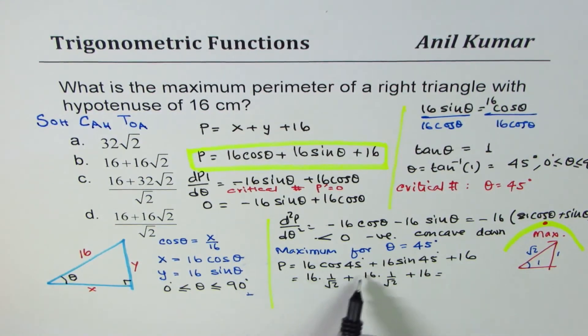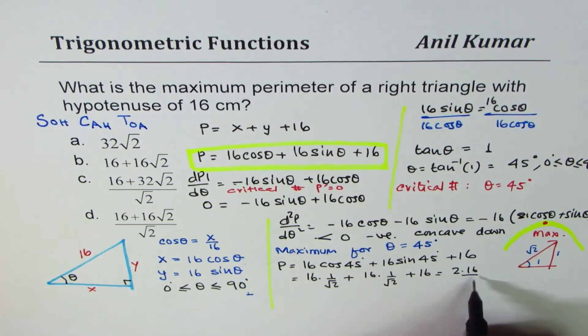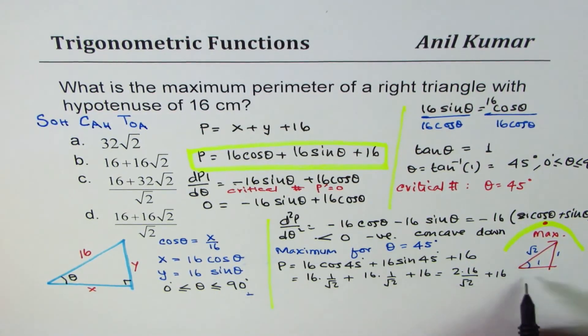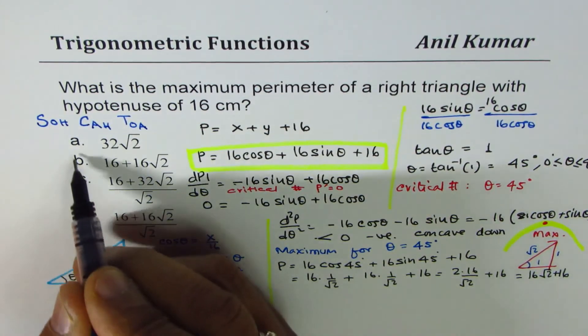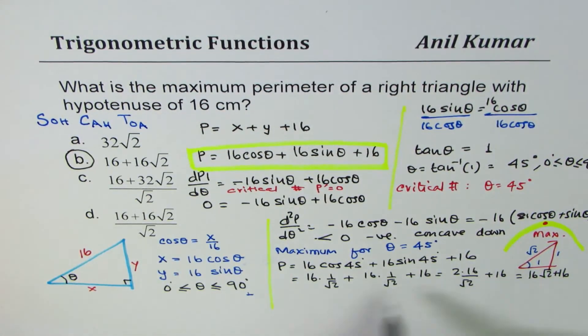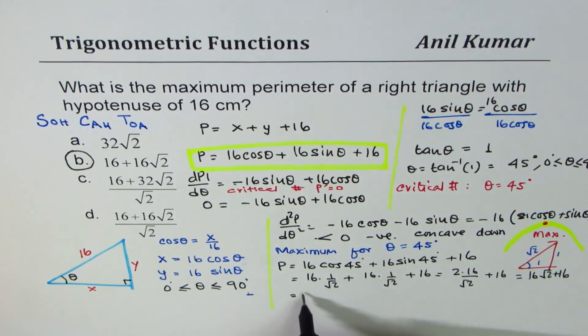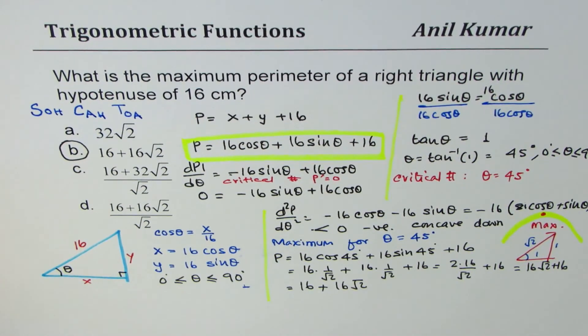When you add them, you get 2 times 16 over square root 2 plus 16. When you divide 2 by square root 2, you get square root 2, so you write this as 16 square root 2 plus 16. We do have option B, which is 16 plus 16 square root 2, and that becomes the maximum perimeter for a fixed hypotenuse of 16. It's very important to understand how we derive it.